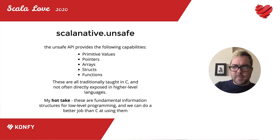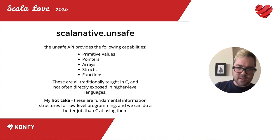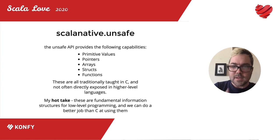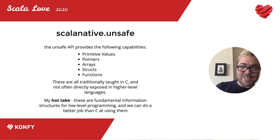My first real hot take: these aren't just C-isms or aspects of the C abstract machine as some people have been arguing recently. These are fundamental information structures for programming at the lowest level, that you get from Knuth or from von Neumann's papers. And it's entirely possible to do a better job than C does at exposing these structures and working with them — that's what I'm going to try to argue for the rest of this talk.